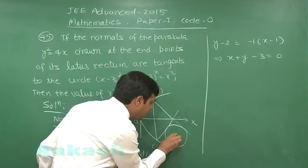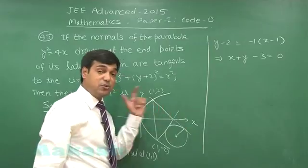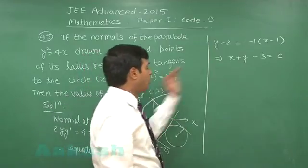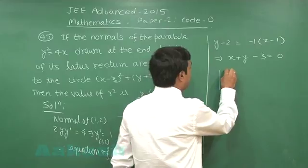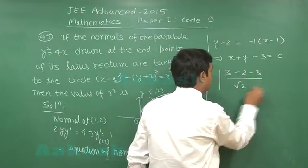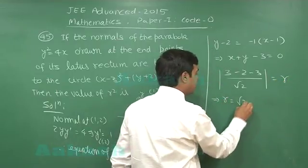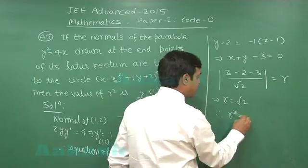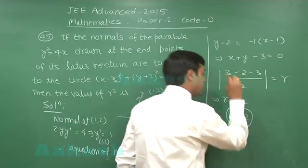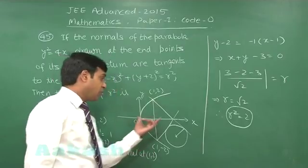Now the question says this line is a tangent to the circle, meaning the length of the perpendicular from the center to this line equals the radius. So drop the perpendicular on this line from (3, -2). This will be equal to radius. So simply r is √2. Hence the required term r^2 is 2.